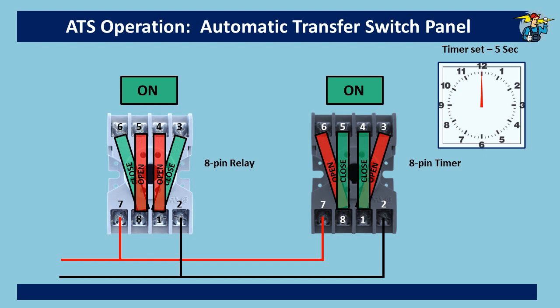The relay and timer got power — the OFF position changed to ON. On the relay, the normally closed positions are now open and the normally open positions have changed to closed. On the timer, however, the changes do not appear yet. With power ON, the clock starts counting, and as soon as it reaches the set time of five seconds, the changes happen. This delay ensures changeover does not occur until the restored power is stabilized — it is a safety precaution.